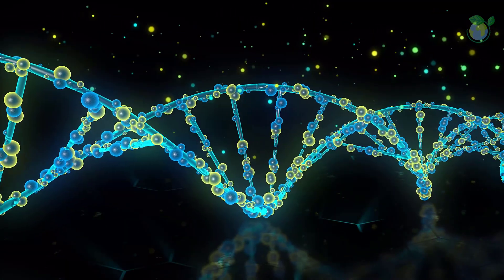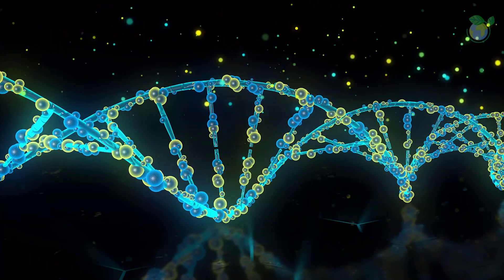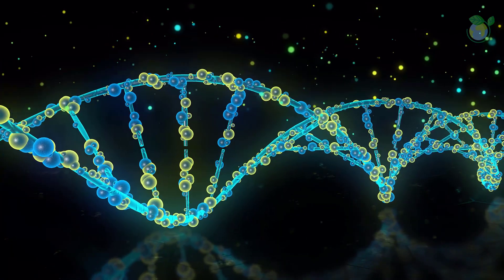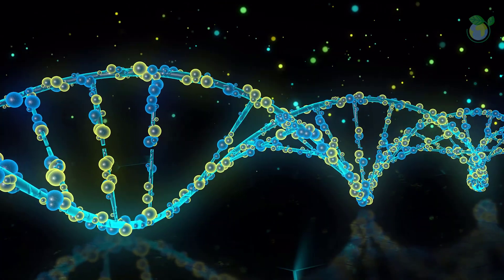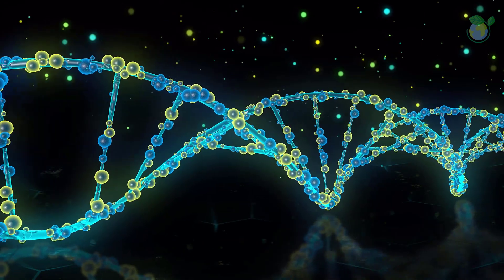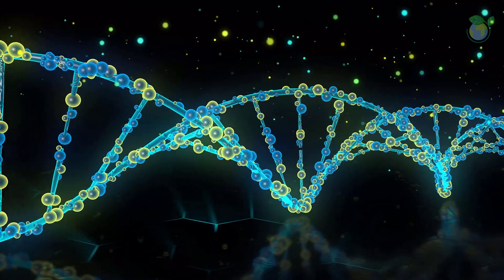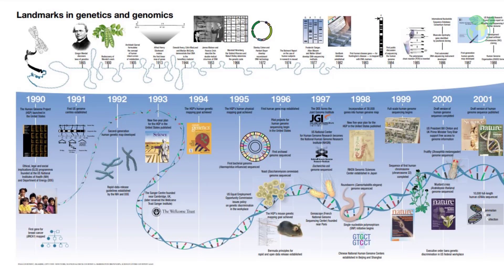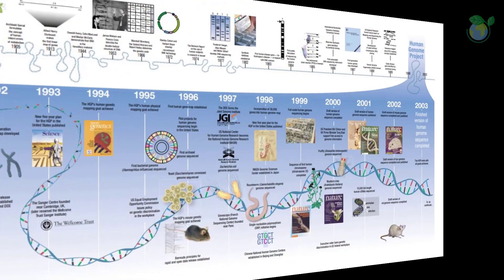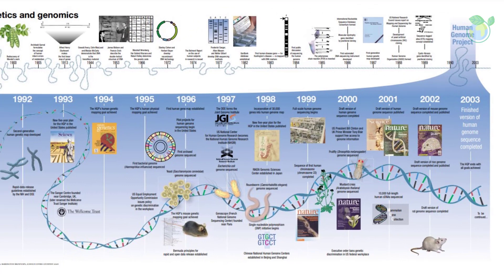Sanger sequencing was the main method used in research until the early 2000s and led to significant advancements, such as the completion of a detailed reference sequence of the human genome through the Human Genome Project, a large international collaboration. The field of sequencing expanded dramatically, with the introduction and availability of high-throughput and massively parallel sequencing methods, also known as next-generation sequencing, which made the technology more accessible to individual labs.